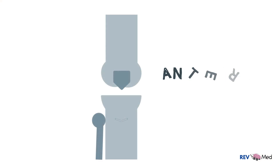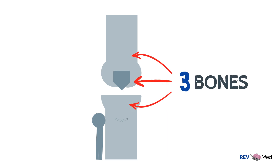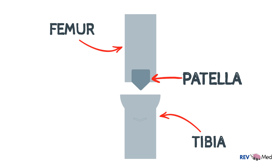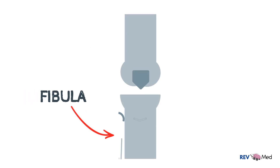Here we'll draw the interior view of the right knee. The knee joint is made up of three bones: the femur, the tibia, and the patella. We'll draw these two side swellings of the femur which are the lateral condyle and the medial condyle. The fibula drawn here does not make up the knee joint but it does directly articulate with the tibia.